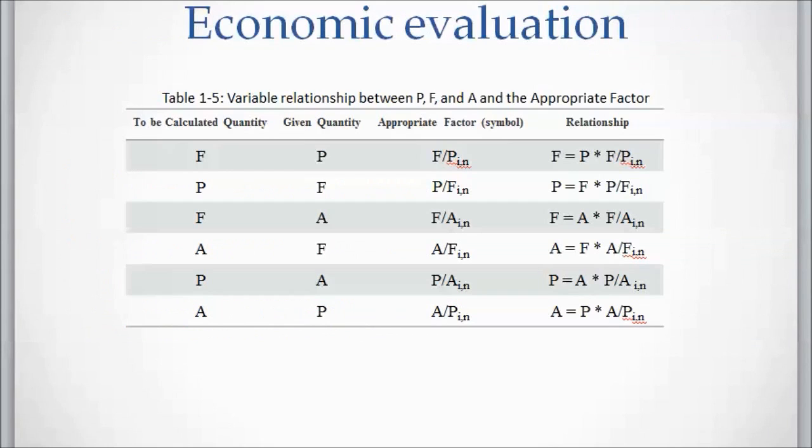You can see these six categories in this table. The first column shows the unknown variable—the variable that needs to be calculated. The second column shows the given variable, and the third column shows the appropriate factor. Factor is just a notation, a symbol to summarize the problem. The slash sign is not a division operator.